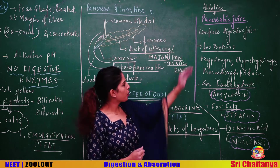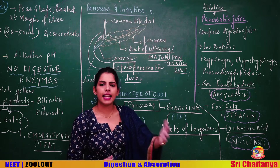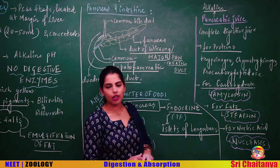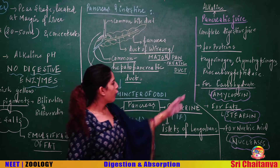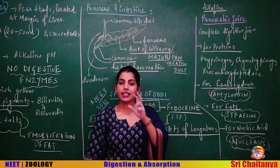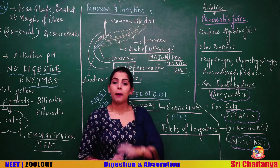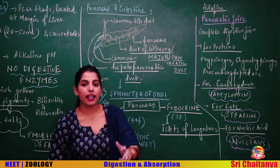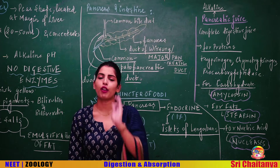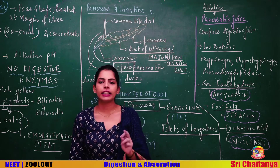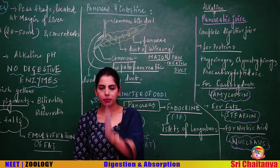Pancreatic juice contains protein-digesting enzymes in the inactive state: trypsinogen, chymotrypsinogen, and procarboxypeptidase. For carbohydrate digestion it has amylopsin (pancreatic amylase). For fats it has pancreatic lipase, popularly known as steapsin — the major enzyme for fat digestion. For nucleic acids it has nucleases.